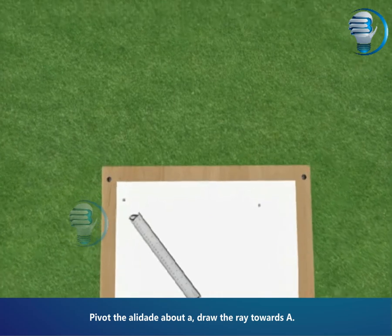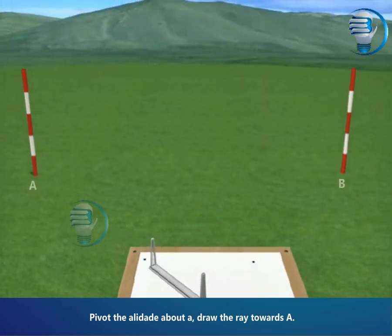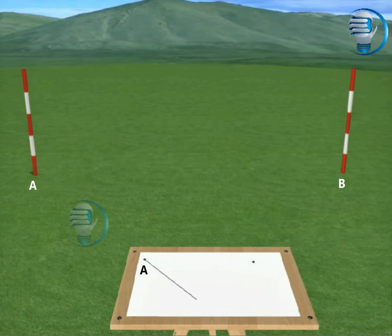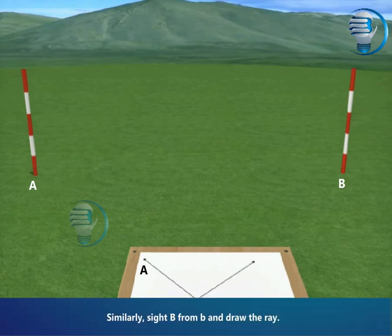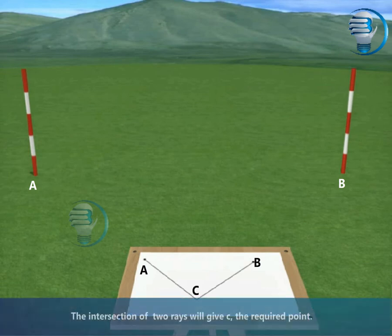Pivot the alidade about A and draw the ray towards A. Similarly, sight B and draw the ray. The intersection of the two rays will give C, the required point.